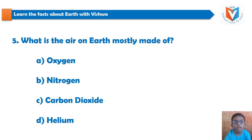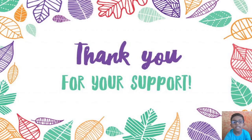Fifth question — this is the question for you. If you know the answer, you can type it in the comments. I will tell you the answer in part 2 of this video. What is the air on Earth mostly made of? Oxygen, Nitrogen, Carbon Dioxide, or Helium. Thank you for your support. We can meet in part 2 of this video. Bye-bye.